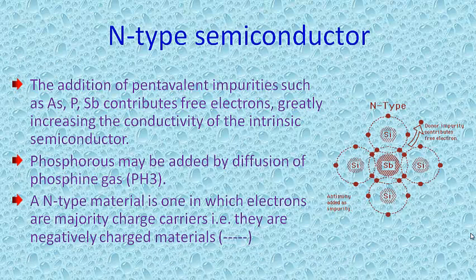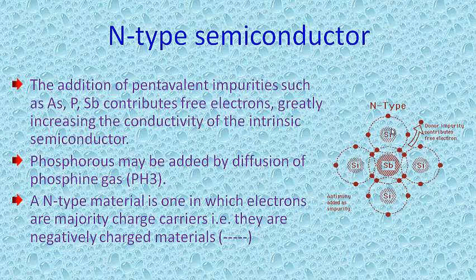Next is N-type semiconductor. If we add pentavalent impurities like arsenic, phosphorous, or antimony to an intrinsic semiconductor, they contribute free electrons — that creates an N-type semiconductor. Phosphorous, for example, can be added as phosphine gas. In N-type material, the majority carriers are electrons, indicated with a minus sign, and minority carriers are holes. Antimony is taken as an example here to illustrate N-type semiconductor.